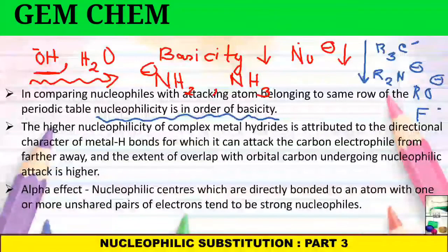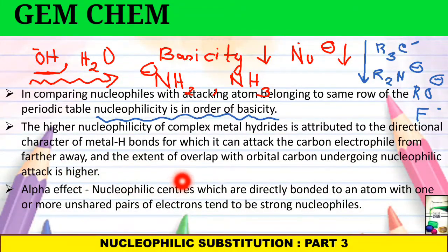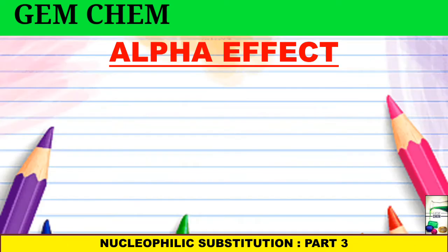The last important point in this case is the alpha effect. Nucleophilic centers which are directly bonded to an atom with one or more unshared pairs of electrons tend to be stronger nucleophiles. That is, if suppose you are having a nucleophile with an adjacent atom containing a pair of lone electrons, there will be stabilization of the transition state which is being formed.